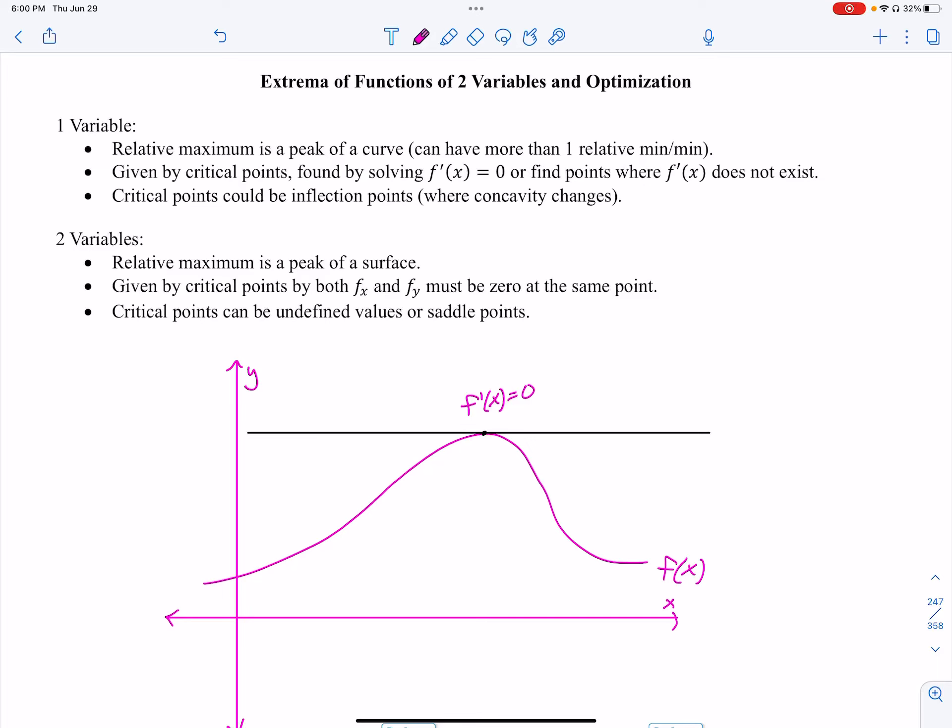In this video, we'll begin our discussion of finding extrema given a surface or functions of more variables. Back in one variable, in Calc 1, we would have a peak in our curve, and it would be a relative max, meaning just in some neighborhood. If you look in some kind of scope, it looks like the highest point of that function. That is a relative maximum.